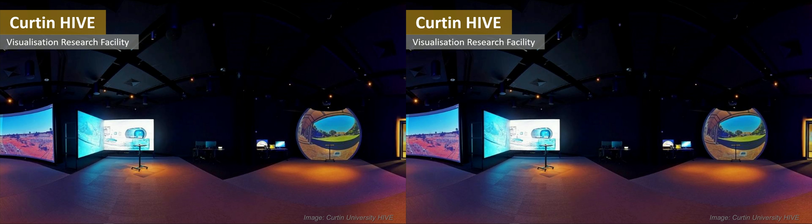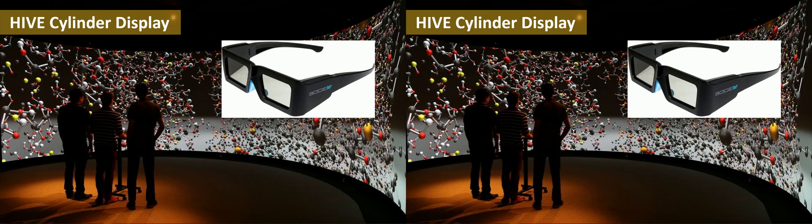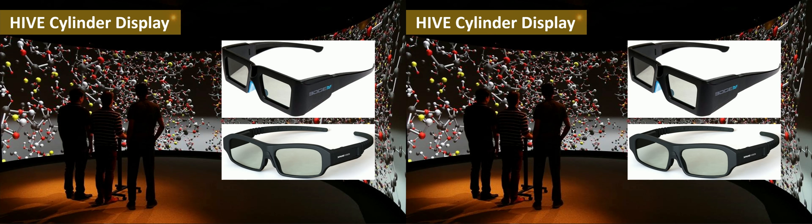Two of these displays are stereoscopic, and we also have a team of four people supporting the facility and academics who wish to use visualisation in their research. The cylinder display is a 180-degree field of view cylindrical display, 3 metres high and 8 metre diameter, driven by three projectors. It uses active stereo with Volfoni 3D glasses. The other display uses 3D glasses from Xpand, and both are time sequential active shutter glasses.